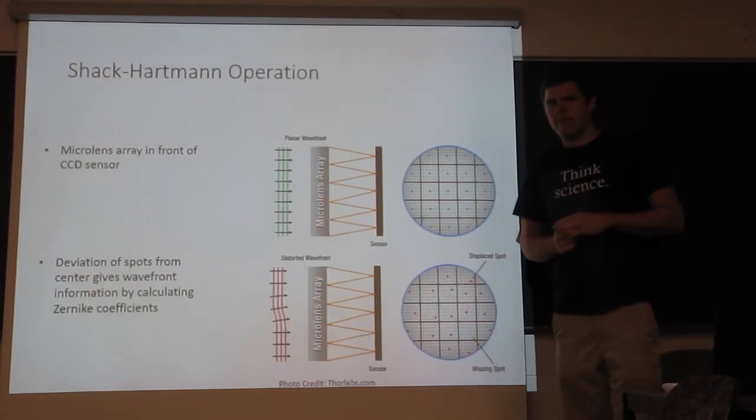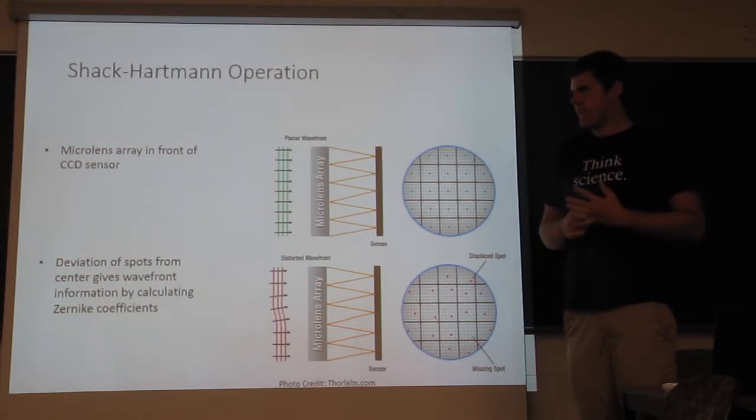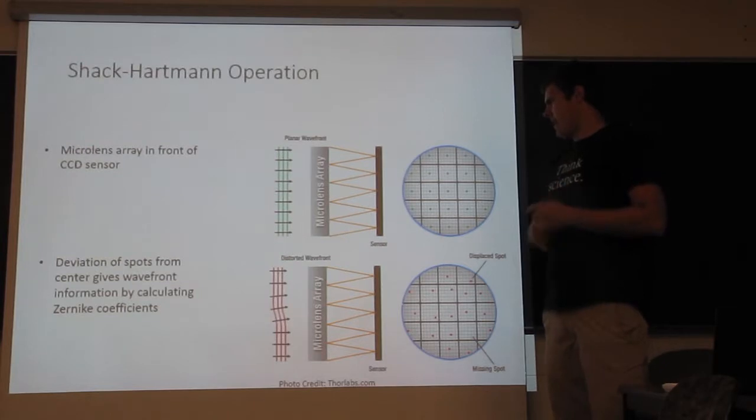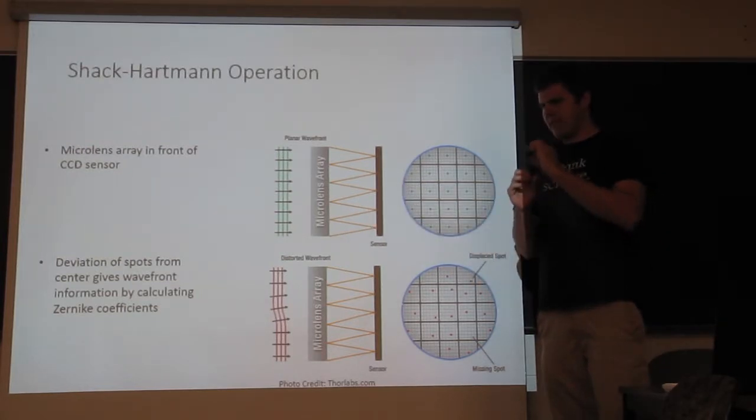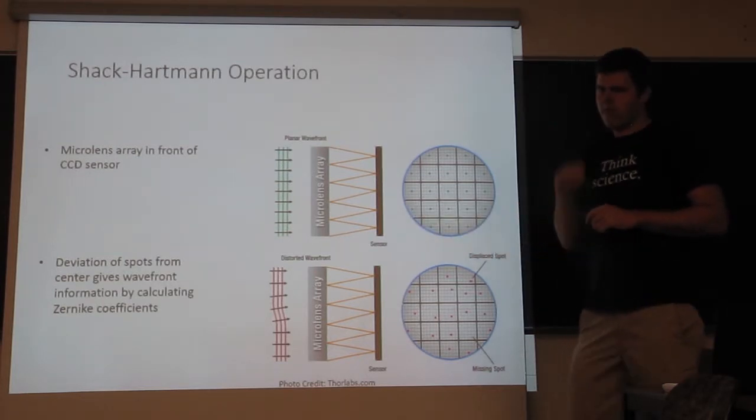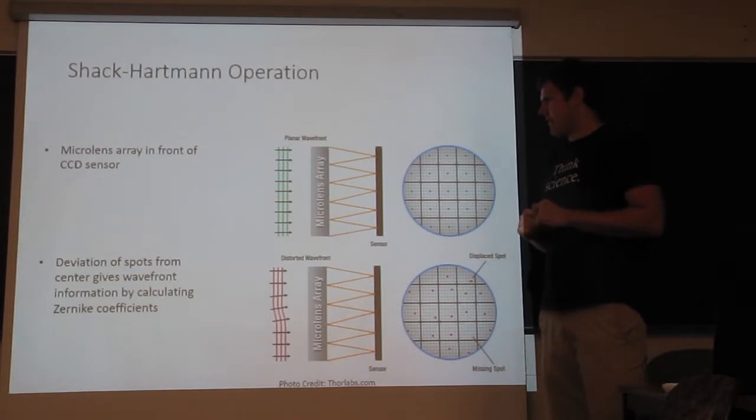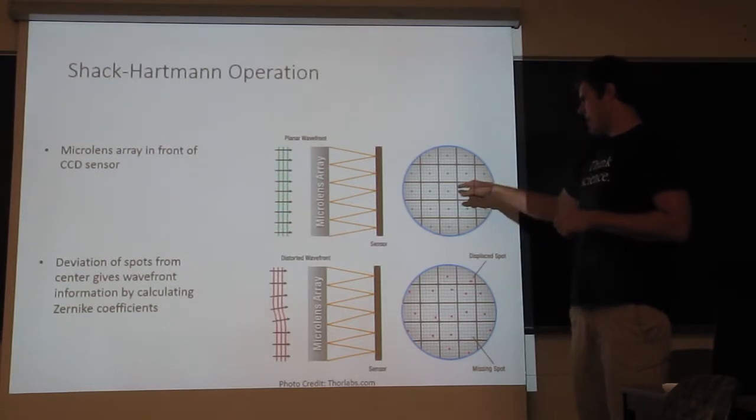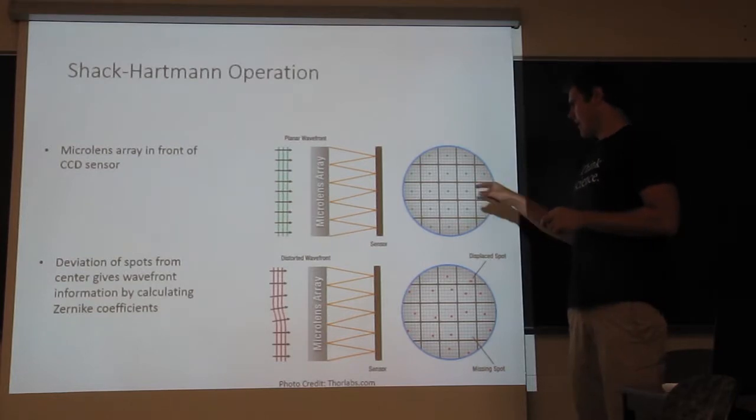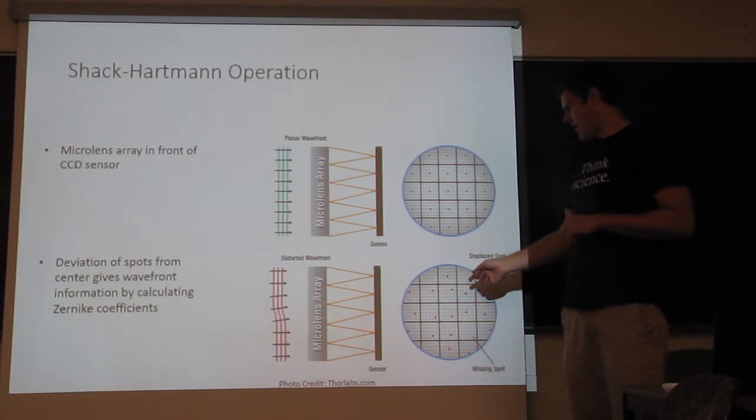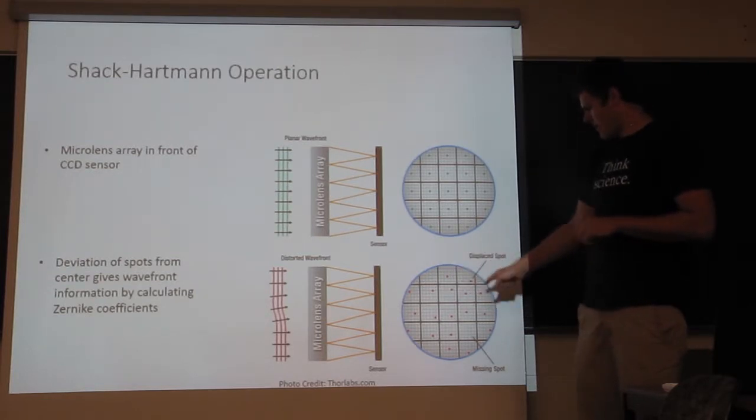Okay, so now to quickly discuss what a Shack-Hartmann wavefront sensor does. So there's two elements to this wavefront sensor. You have a microlens array, which is many lenses in an array, in front of a sensor, like a CCD camera. So the way this is set up is if there's a flat wavefront coming into the wavefront sensor, then that microlens array will focus many spots into the center of, say, a certain section that is the section for each lens. So if the beam is deformed, then the spots will focus in different places in their respective areas.